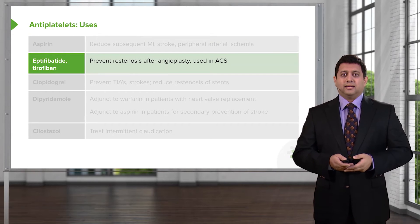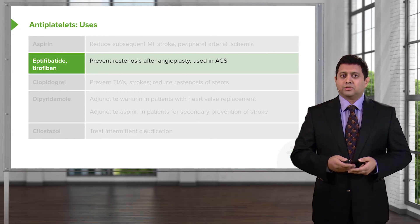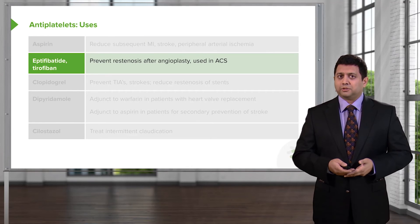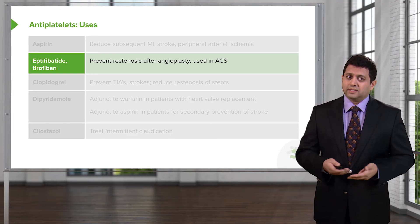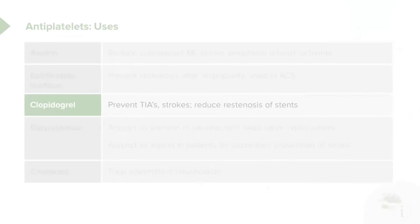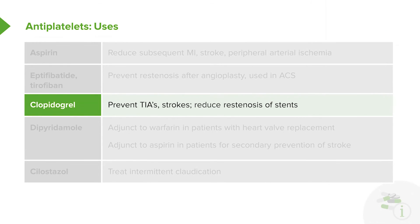The direct GP2B3A inhibitors also prevent restenosis after angioplasty and are used in acute coronary syndrome. Clopidogrel, remember, is an irreversible inhibitor — it prevents TIAs or mini strokes, prevents strokes, and reduces restenosis of stents. We often use clopidogrel or prasugrel for about a year after placing a drug-eluting stent.